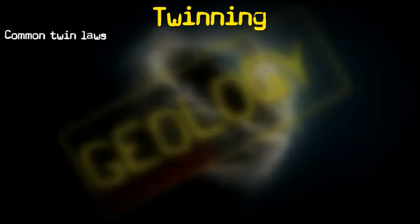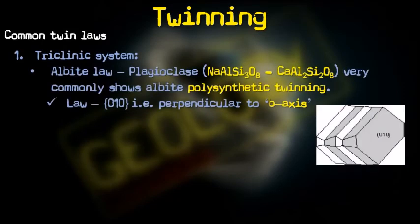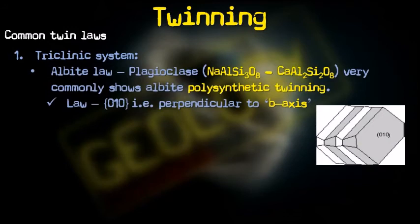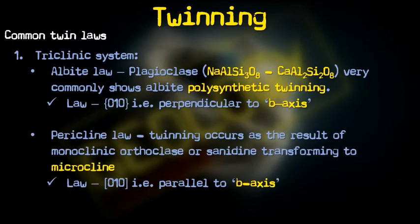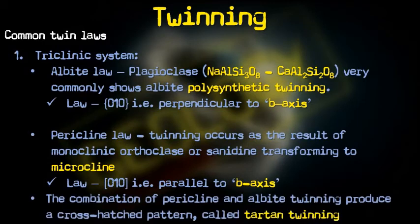Common twin laws represent specific kinds of twinning expressed using Miller indices. In the triclinic system, we have the albite law — plagioclase shows albite law with twin plane (010), perpendicular to the b-axis. Next is the pericline law, (010) in square brackets, meaning parallel to the b-axis, also present in microcline. When pericline and albite twinning occur together, they produce a cross-hatched pattern called tartan twinning.